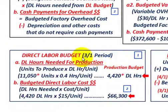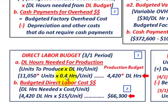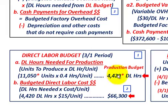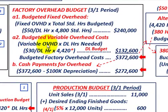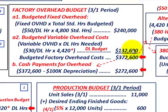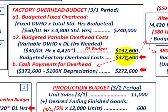From the direct labor budget, direct labor hours needed = 11,050 units × 0.4 hours per unit = 4,420 hours. Going back to the factory overhead budget: variable overhead = $30 × 4,420 hours = $132,600. Adding fixed overhead of $240,000 plus variable overhead of $132,600 gives total budgeted factory overhead cost of $372,600.